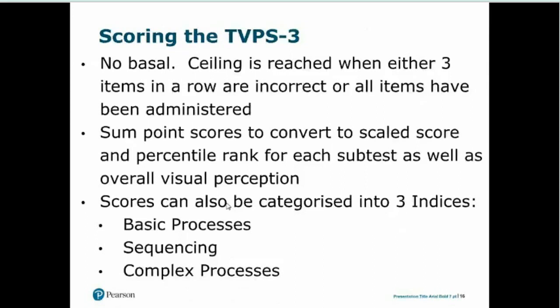On the TVPS3 there is no basal, so you don't need to achieve a certain number before scoring begins. There is a ceiling when the child gets three items in a row incorrect or reaches the end of the subtest. Scoring involves summing scores for each subtest, then converting to scaled scores and percentile ranks. The test also provides composite indices: a basic processes index, sequencing, and complex processes.